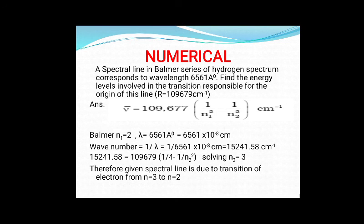Since wave number is the inverse of wavelength, ν̄ = 1/λ. Using the given wavelength, you can calculate the wave number, which comes out to be 15241.58 cm⁻¹. Substituting into the Rydberg equation: 15241.58 = 109677 × (1/2² − 1/n2²), where n1 = 2. Solving for n2, you get n2 = 3. Therefore, the given spectral line is due to the transition from n=3 to n=2.